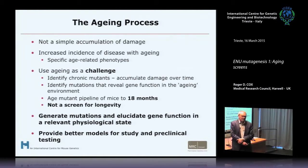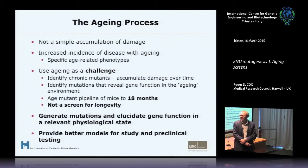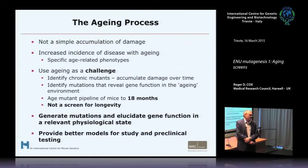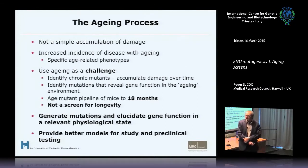Our current aging pipeline goes out to 18 months. This is not a screen for longevity — mice may well live longer than 18 months, but it's a good compromise in terms of the health of the animal. The aim is to identify later onset phenotypes that may reveal new sets of genes that may be of interest in aging in the human population.